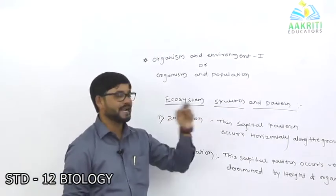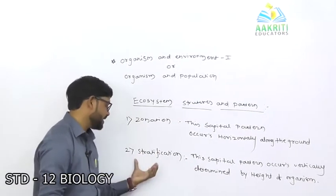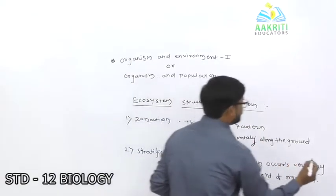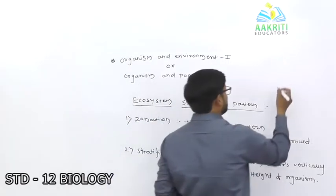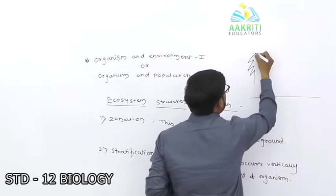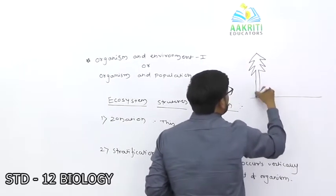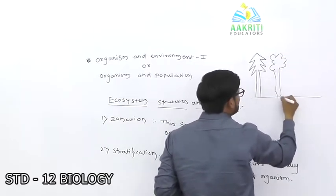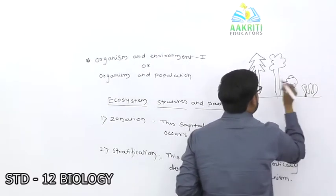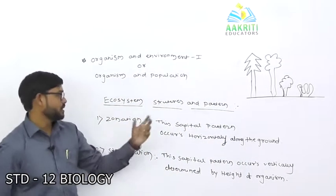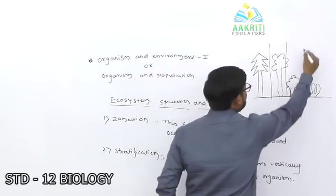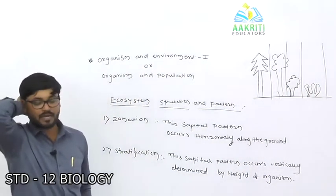About ecosystem structure and pattern: one is zonation and another is stratification. The spatial pattern of zonation occurs horizontally along the ground — trees of different sizes are distributed along the ground level. This horizontal arrangement shows how species are distributed along a horizontal gradient.